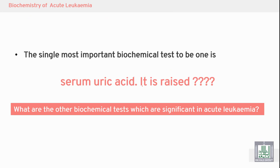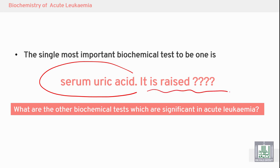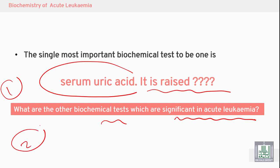Regarding the biochemistry of acute leukemia, the single most important biochemical test is serum uric acid. Serum uric acid is raised in most cases of acute leukemia. An important question is: what other biochemical tests are significant in acute leukemia, and what other conditions lead to an increase in serum uric acid?